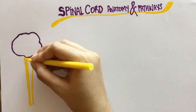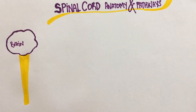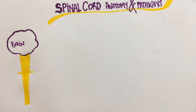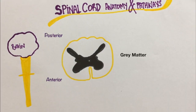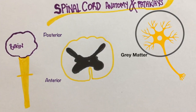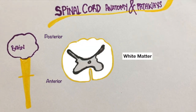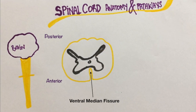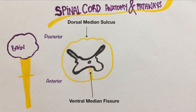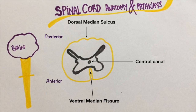This is the brain and this is the spinal cord. A cross section of the spinal cord will look something like this. This is the grey matter, which contains the cell body of neurons. The white matter is on the periphery and it consists of the axons of neurons. This is the ventral median fissure and this is the dorsal median sulcus. The cerebrospinal fluid passes through the central canal.